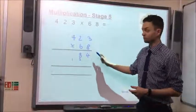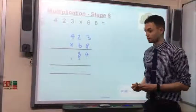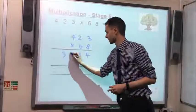Then we've got 8 multiplied by 4, again moving over. 8 times 4 is 32. Add the 1 we've carried over gives us 33.